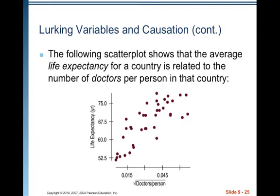The following scatter plot shows that the average life expectancy for a country is related to the number of doctors per person in that country. So, you can see that as the square root of the doctors per person increases, so does the life expectancy in a linear fashion.